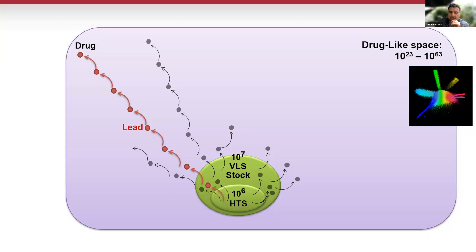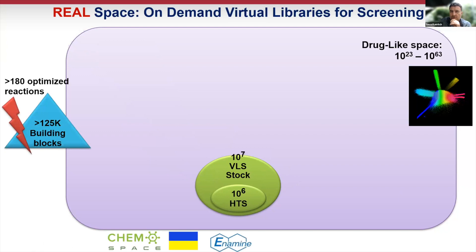Imagine that you find a hit in a 10-million-compound in-stock space. It's a decent hit and it can be optimized to a lead and a drug candidate. The problem is each step of this optimization is done in general chemical space and requires custom synthesis most of the time, which is expensive and takes a lot of time — we learned this the hard way in many cases.